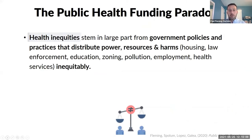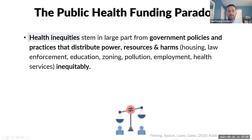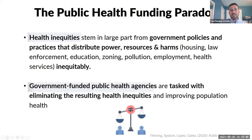Health inequities stem in large part from government policies and practices that have distributed power, resources, and harms inequitably. Resources such as education or housing have been distributed inequitably. Harms such as law enforcement or pollution have been distributed inequitably. And of course, power is not equal across society. Alongside that, government-funded public health agencies are tasked with eliminating the resulting health inequities and improving population health. So some government policies are causing the health inequities, and then we're also paying health professionals to fix that — that's the public health funding paradox.